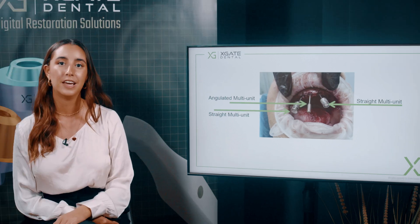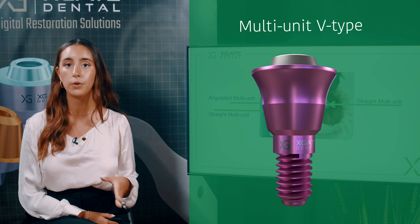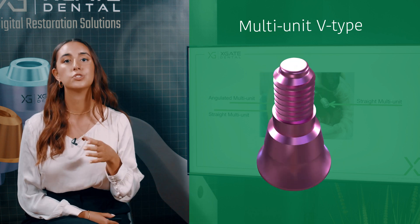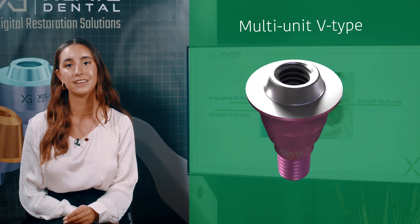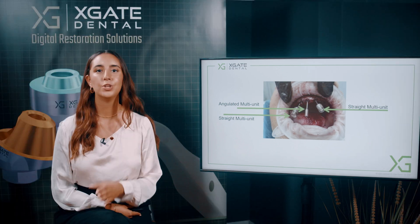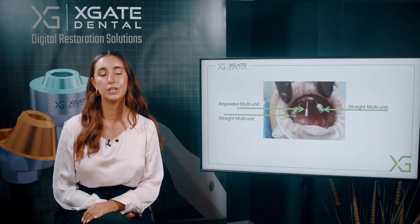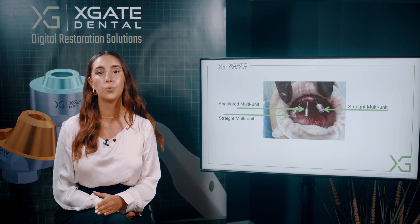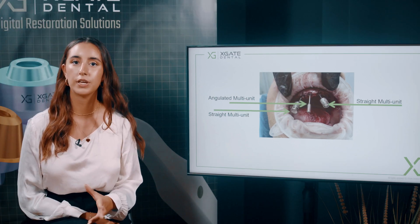After we place the implants, we preferably would like to place an angulated or straight multi-unit. If you place straight multi-units, you know right away where the screw channel will be, because the screw channel will be in the same axis of the implant — right above the implant. When you place an angulated multi-unit, in many cases you can also see right away where the screw channel will be.